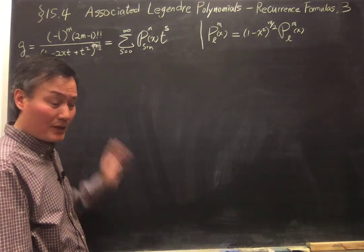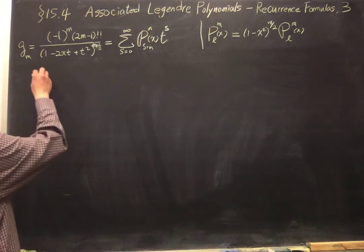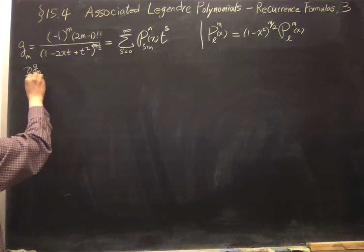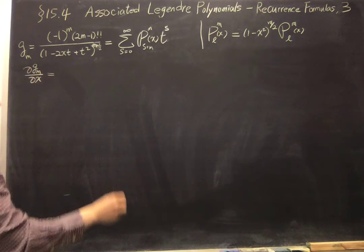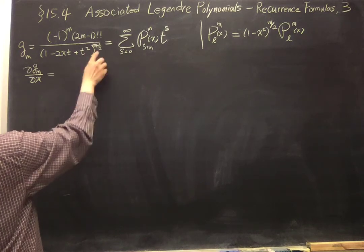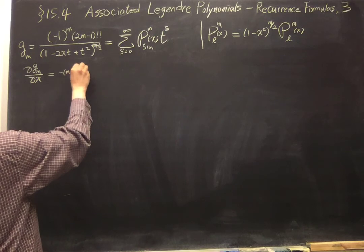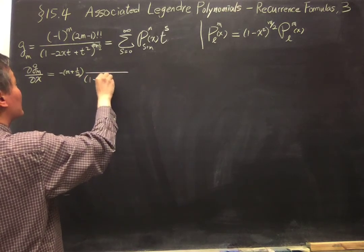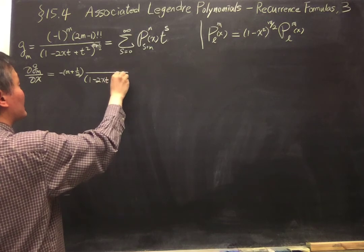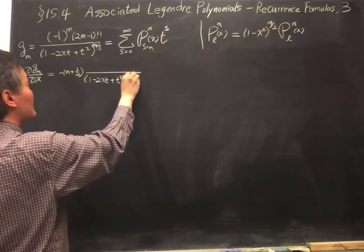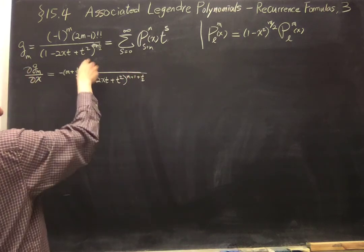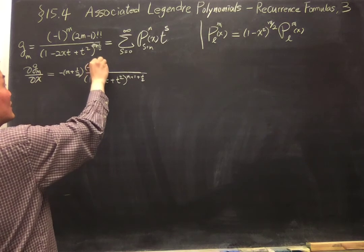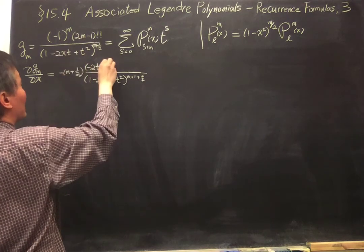Just like applying to other generating function, so we take the derivative. So we have g_m given by this form, so we take dg_m/dx. Now that will give you this minus (m + 1/2) factor and the same factor divided by one more time this factor, so it becomes (m + 1 + 1/2). And then take the derivative of the factor will give you minus 2t.